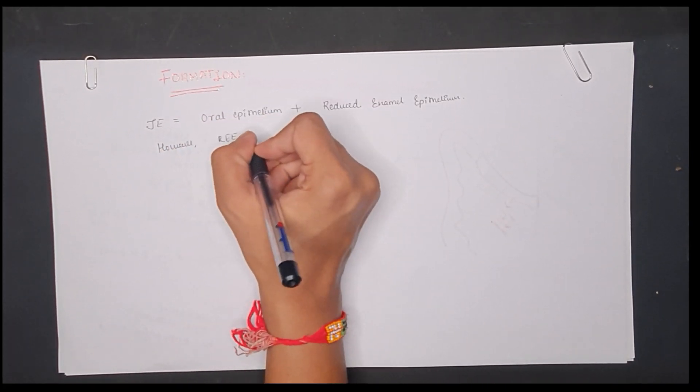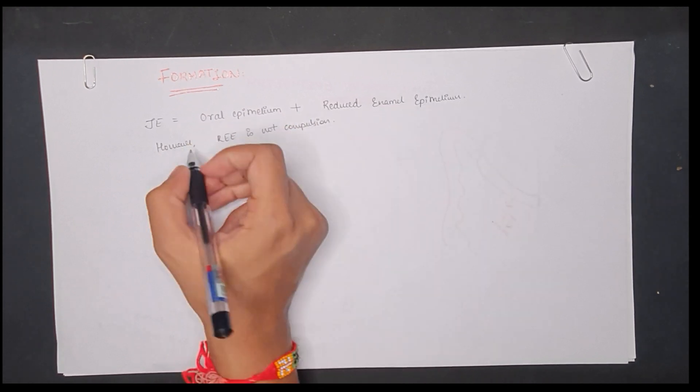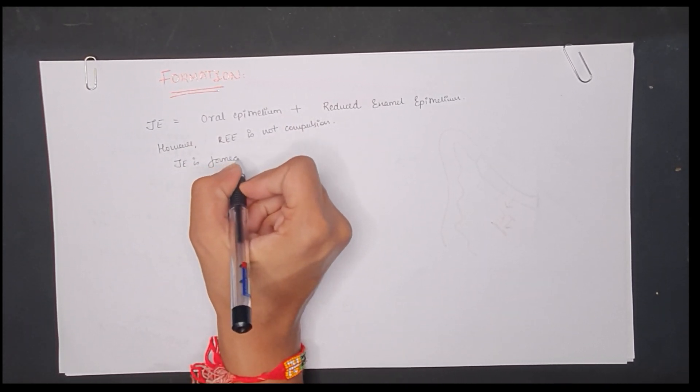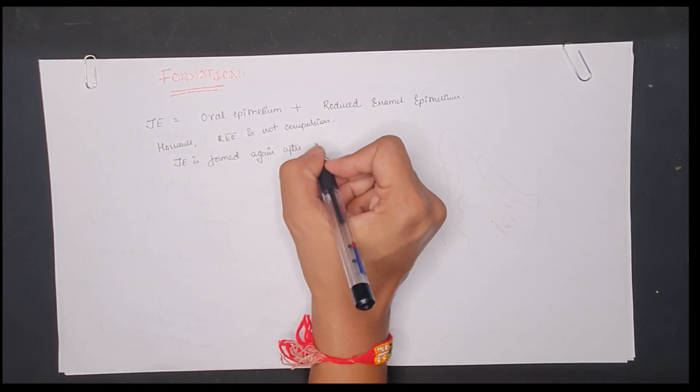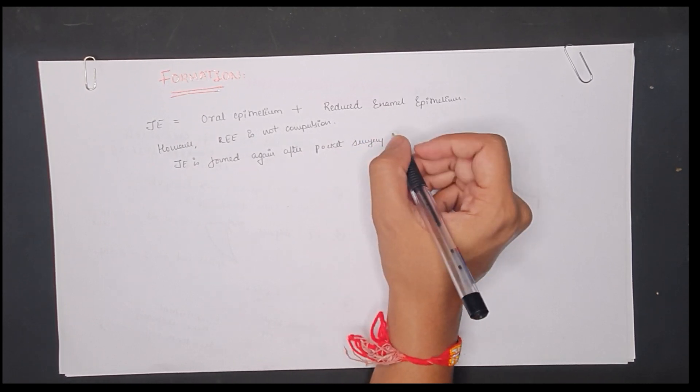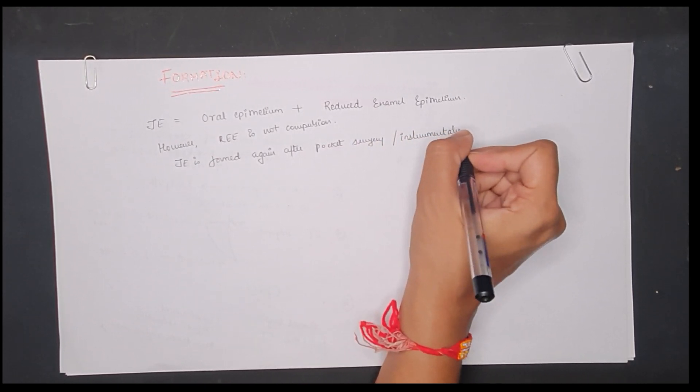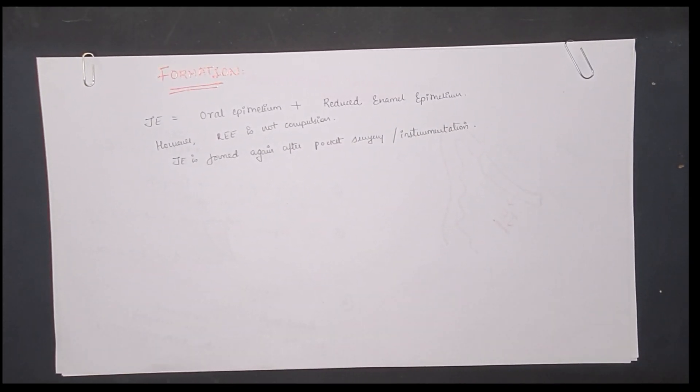However, if we see, the reduced enamel epithelium is not essential for its function. It forms on its own after pocket instrumentation or surgery, and it also forms around implants.